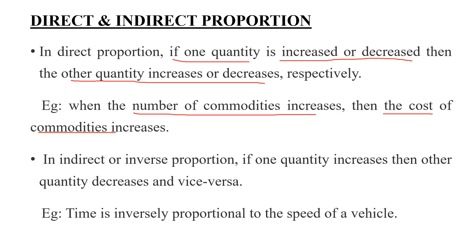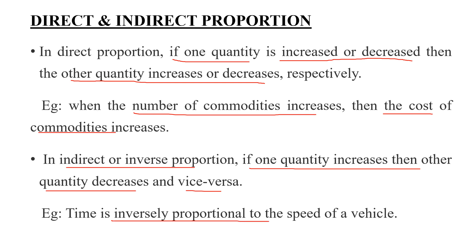Next, we will go to indirect proportion. Indirect proportion is inverse proportion. If one quantity increases, then the other quantity decreases and vice versa. Example: time is inversely proportional to the speed of the vehicle.